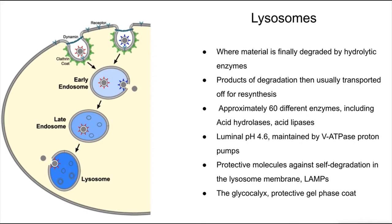To prevent the lysosome from degrading itself with its own enzymes, it possesses LAMP proteins, particularly LAMP1 and LAMP2, which make up roughly 50% of proteins in its membrane. These proteins produce the glycocalyx, a protective gel-phase coat which surrounds the membrane and prevents degradation.